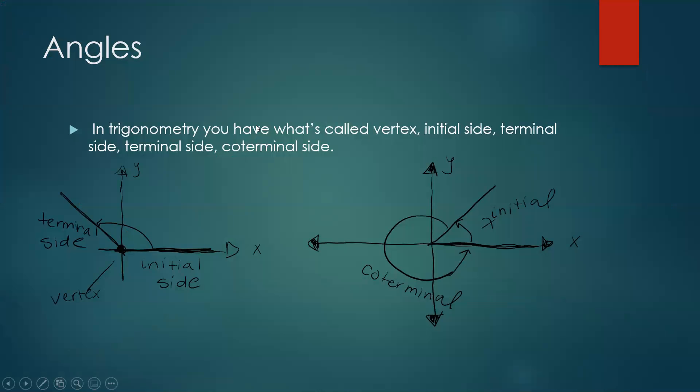So let's first talk about angles. In trigonometry, we have what's called a vertex, initial side, and terminal side. Here, this is what a typical unit circle looks like.